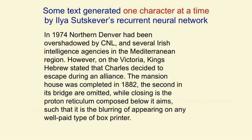This text was generated one character at a time. Notice that it makes reasonably sensible sentences composed almost entirely of real English words. Occasionally it makes a non-word, but they're typically sensible. Within a sentence it has some thematic sense — the phrase 'several Irish intelligence agencies in the Mediterranean region' has problems, but it's almost good English. And the thing it says at the end — 'such that it is the blurring of appearing on any well-paid type of box printer' — has a thematic thread about appearance and printing, and the syntax is pretty good. Remember, that's one character at a time.